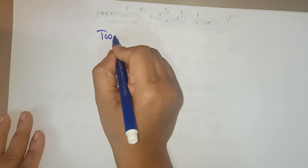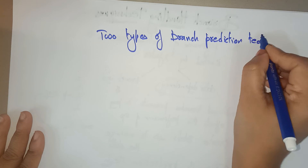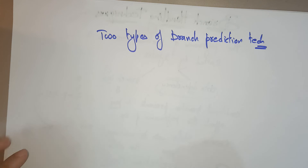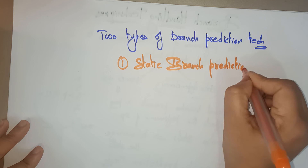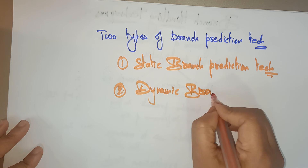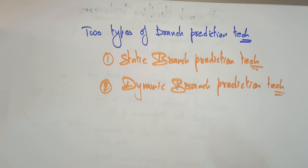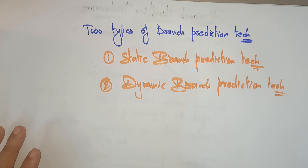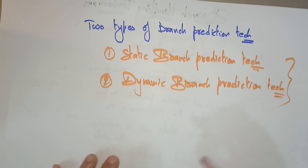There are two types of branch predictions. Can you guess what they are? There are two types of branch prediction techniques: one is the static branch prediction technique and another is the dynamic branch prediction technique. These are the two different types. We use branch prediction techniques to minimize the stalls associated with control hazards, so the two efficient mechanisms are static and dynamic.